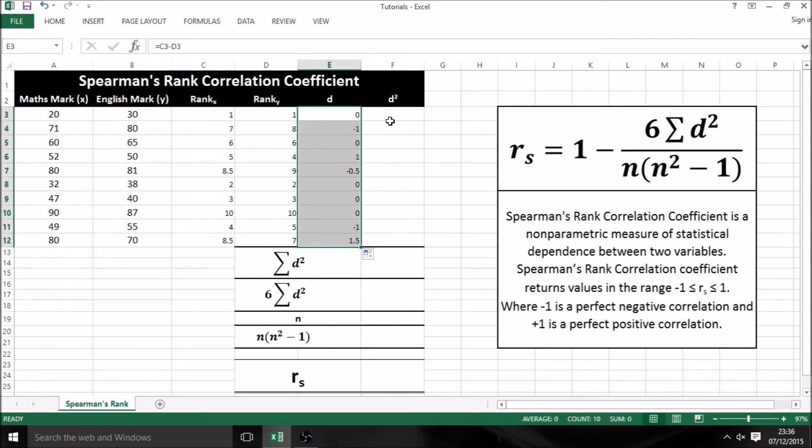Next, our formula requires d squared, or the difference squared. To do this, I'm going to use the power function, so type in equals power, then press tab, and I'm going to select my value of d, then type in a comma and press 2 to square it, then press enter, and use autofill to do the rest.